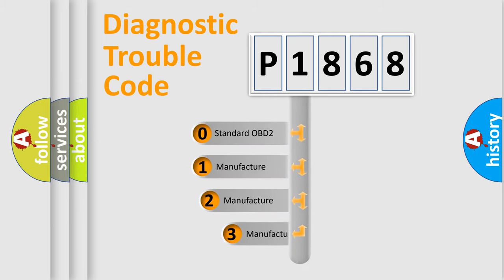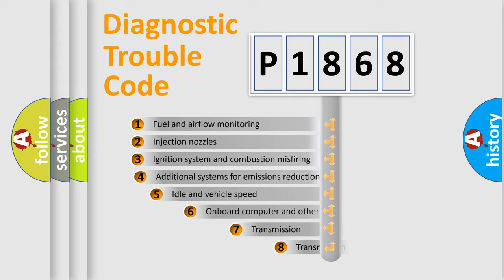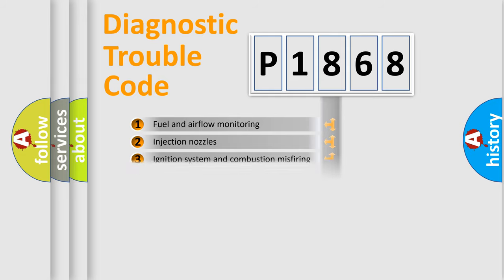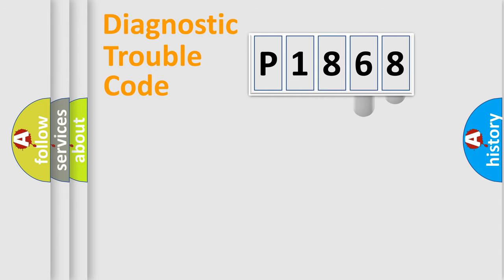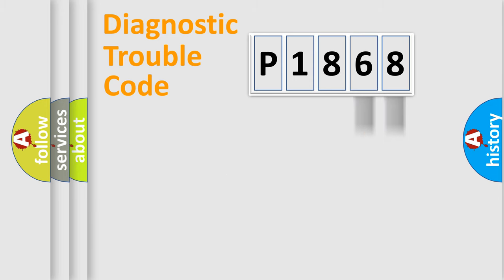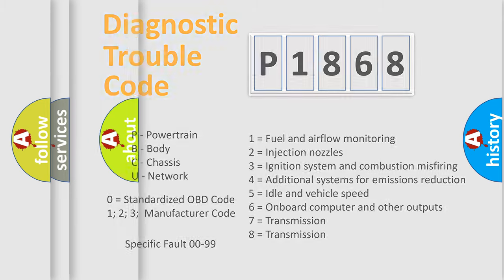If the second character is expressed as zero, it is a standardized error. In the case of numbers 1, 2, 3, it is a more specific expression of a car-specific error. The third character specifies a subset of errors. This distribution is valid only for the standardized DTC code. Only the last two characters define the specific fault of the group. This division is valid only if the second character code is expressed by the number zero.